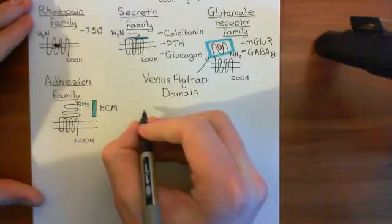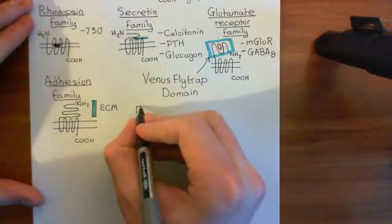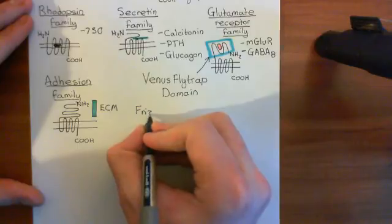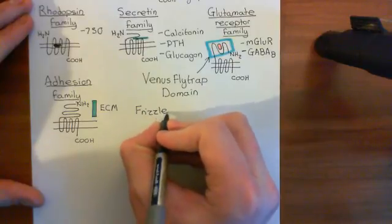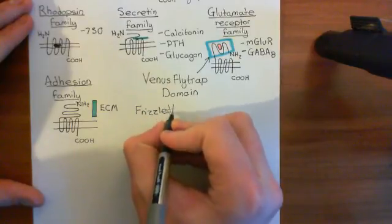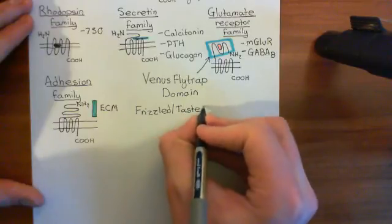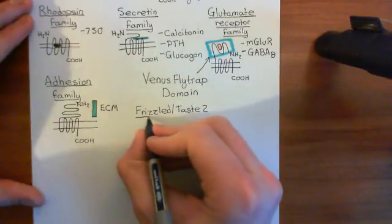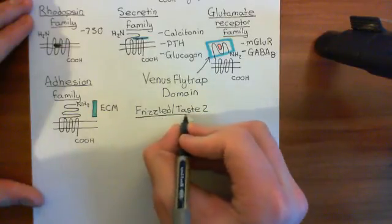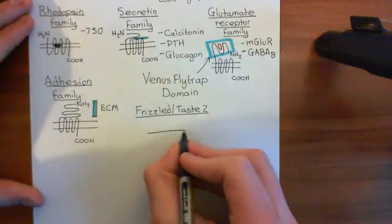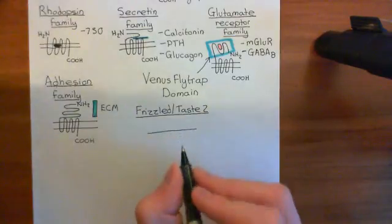The final family has the silliest name — it's called the Frizzled/Taste-2 family, named after the two most famous members of this family.